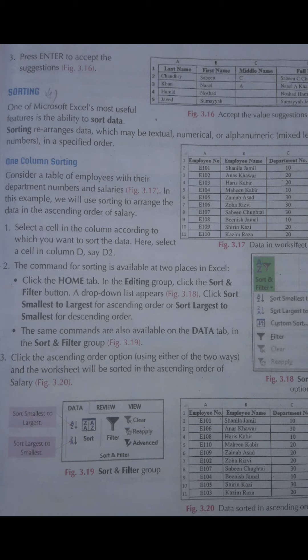Sorting کے اندر ہم textual data — یعنی text form میں جو data ہوتا ہے، numerical data — یعنی number form میں جو data ہوتا ہے، اور alphanumeric — یعنی letters اور numbers کی form میں جو data ہوتا ہے — ان سب کو ایک خاص order میں ترتیب دیتے ہیں.